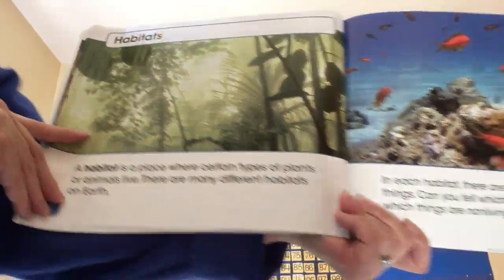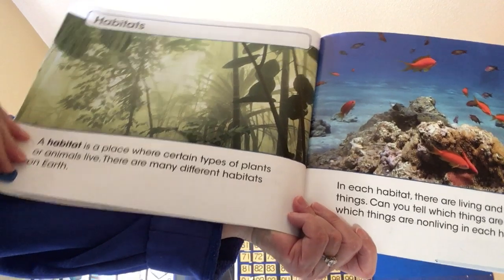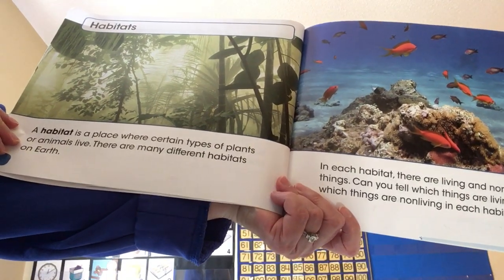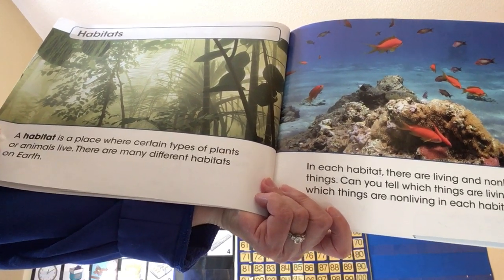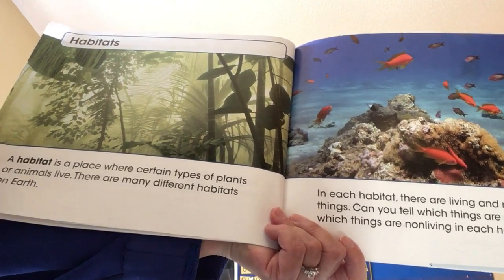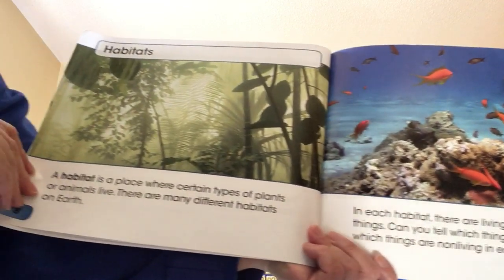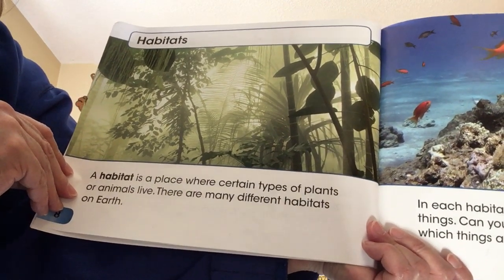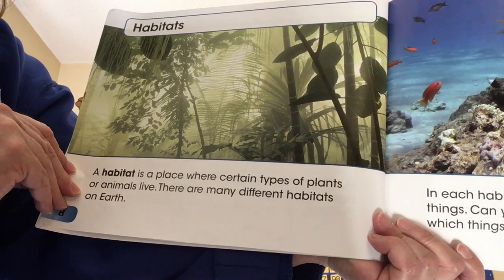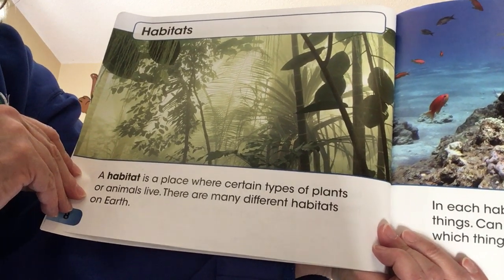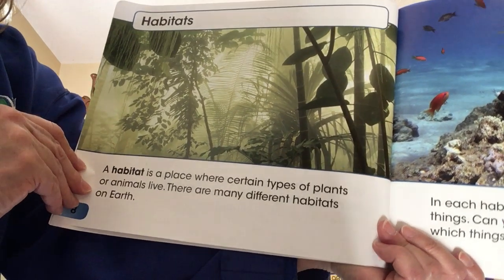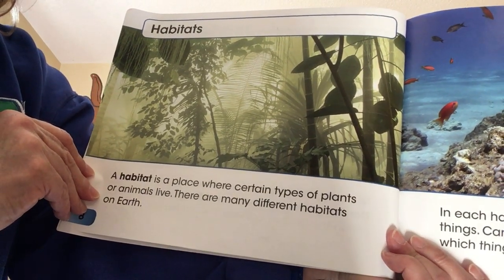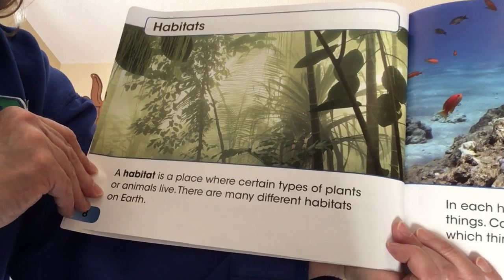Habitats — some of you might have read about this on Pebble Go, habitats of the animals that you were researching. A habitat is a place where certain types of plants or animals live. There are many different habitats on earth. Even people are living things — we know that. Chicks are living things. We live in houses or the city or the country. A bird lives in a nest, and a chicken might live in a chicken coop or at a farm — that would be its habitat.